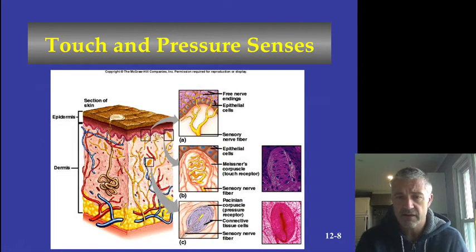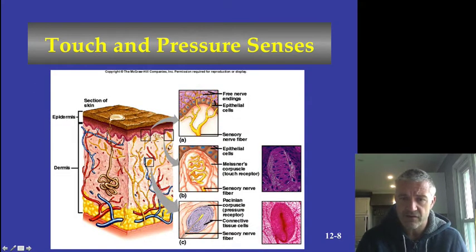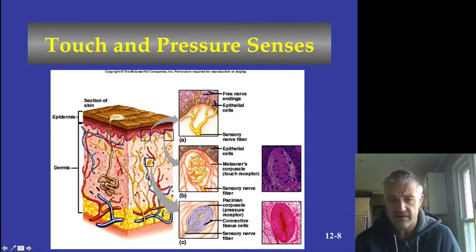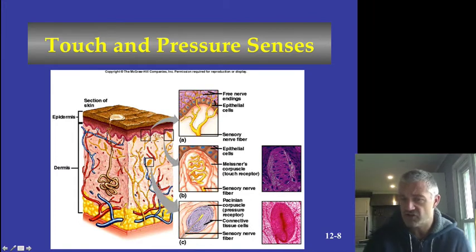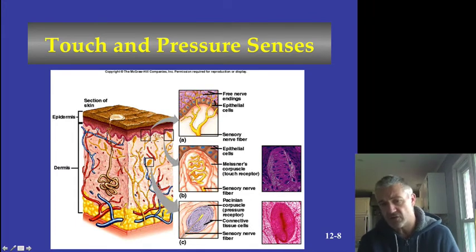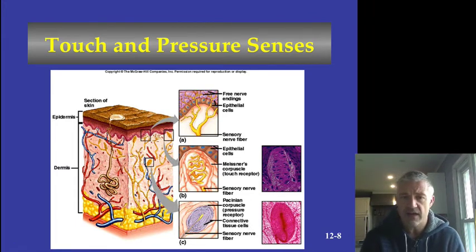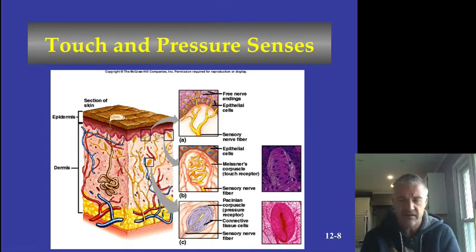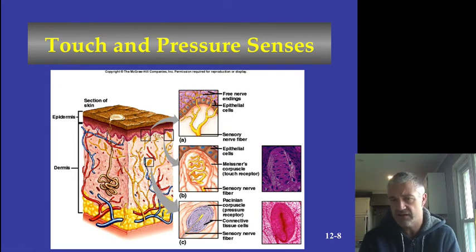You can see the free nerve endings going up into the epithelial tissue, the Meissner's corpuscles in the upper dermis, and the Pacinian corpuscles much deeper. Different gradations result in different thresholds — some Pacinian corpuscles activate with a little pressure, while others require significant force, giving you a range of sensation.